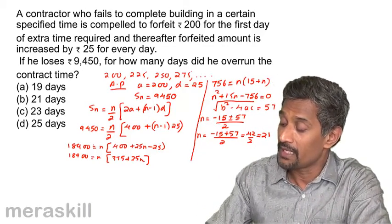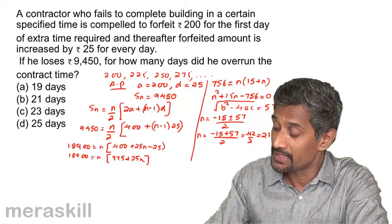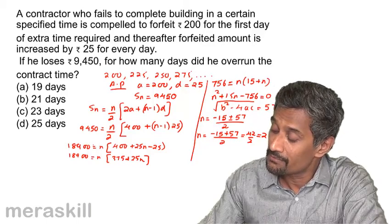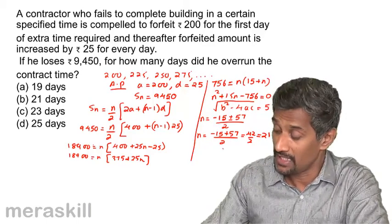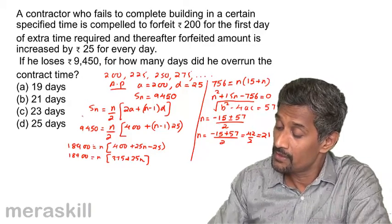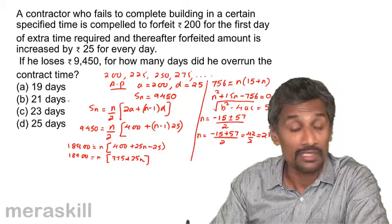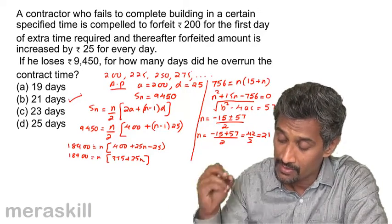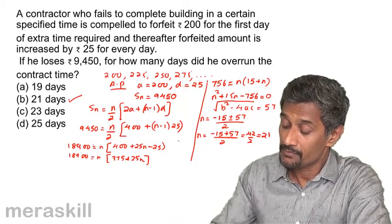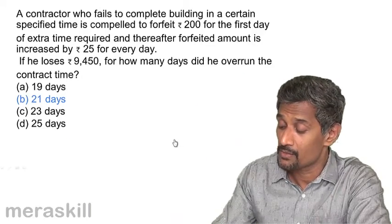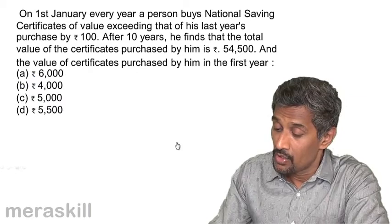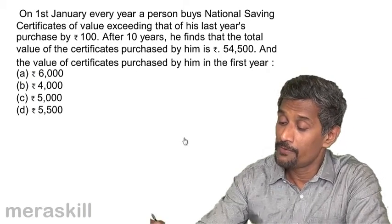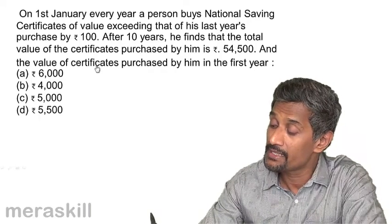The negative root (−15 − 57)/2 = −36 is rejected since the number of days cannot be negative. Therefore the contractor overran the contract by 21 days. This tallies with the expected answer.